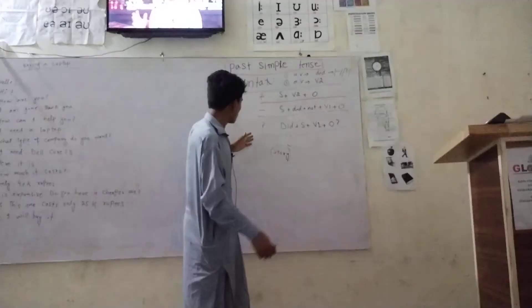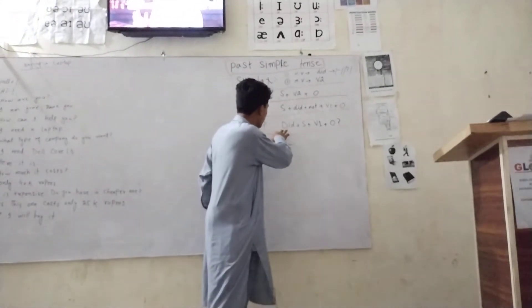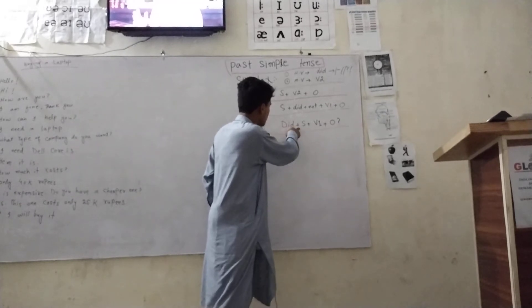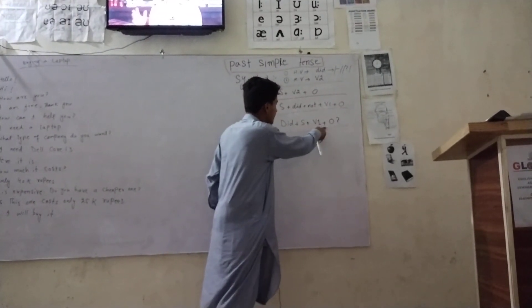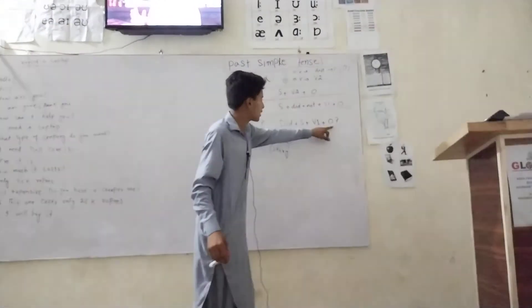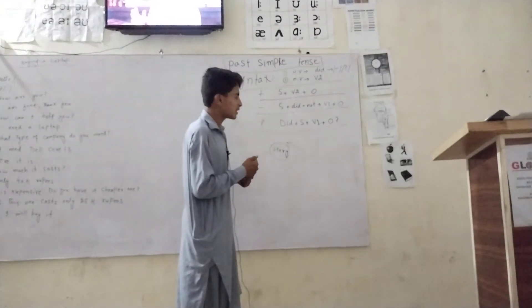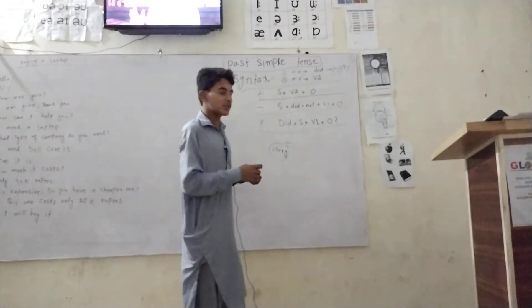After that, how to make interrogative sentences. At the beginning of the sentence we use 'did,' and after that the subject, and then the first form of the verb, and then the object. Don't forget the question mark. If you forgot the question mark, your sentence will be wrong.